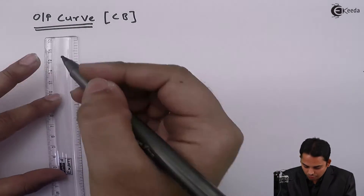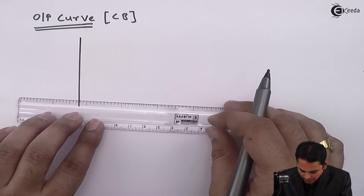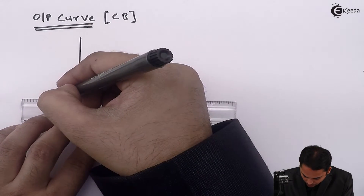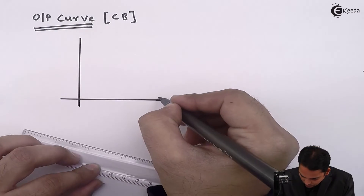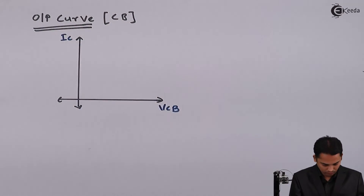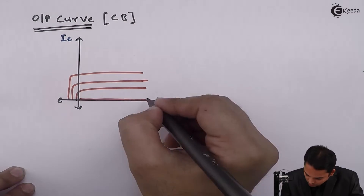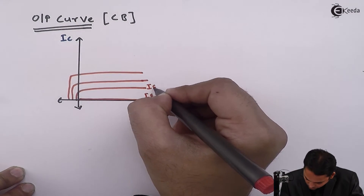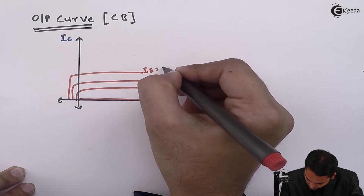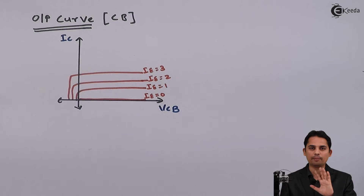If we plot the graph of output characteristics, it will be something like this. This is how we will get the characteristics in output for a common base amplifier.